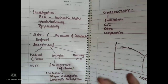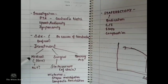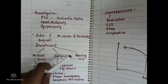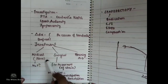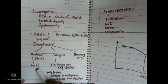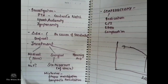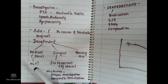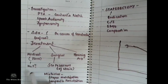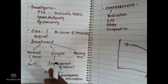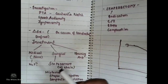Treatment can be divided into three headings: medical, surgical, and hearing aid. Medically, there are no specific treatments, but sodium fluoride may help prevent progression of active disease — it is not a cure per se, but decreases disease progression. It is used when a Schwartze sign is present indicating active disease.